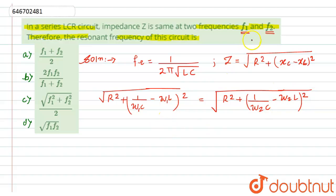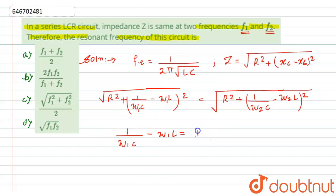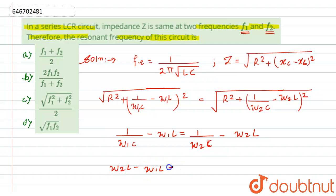The square roots cancel out, and R² cancels on both sides. So we get the relation: 1/(ω₁c) − ω₁l = 1/(ω₂c) − ω₂l. Rearranging: ω₂l − ω₁l = 1/(ω₂c) − 1/(ω₁c).